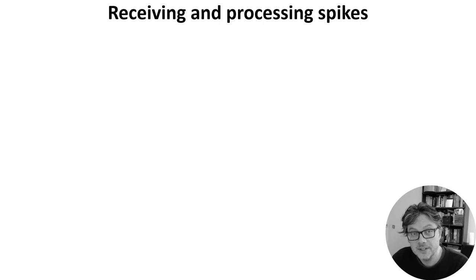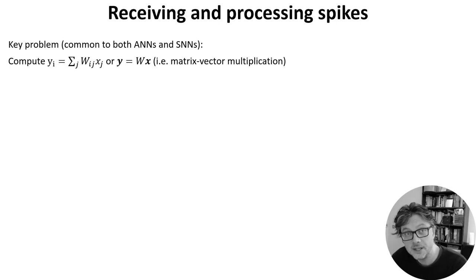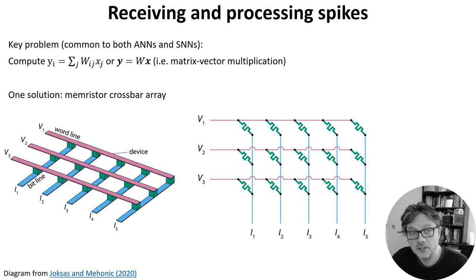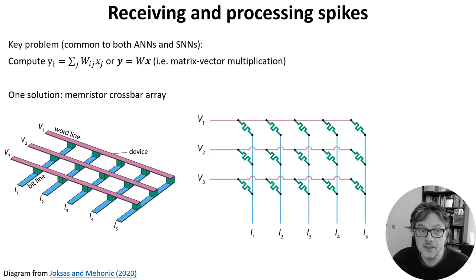Once we've emulated the neuron we need a way to receive and process incoming spikes. The key problem — common to both artificial and spiking neural networks — is the matrix vector multiplication. This is typically the most expensive part of a neural network simulation, so speeding that up or reducing its power consumption is critical. A common solution is the memristor crossbar array. A memristor is an electrical component with a programmable conductance. If you connect them in a grid, you can use it to implement matrix vector multiplication. The rows vi are the inputs represented as voltages and the columns ij are the outputs represented as currents. At each grid point a memristor's conductance represents a synaptic weight, and the total current output of a column is the sum of the grid point currents — exactly the computation you need for matrix vector multiplication.